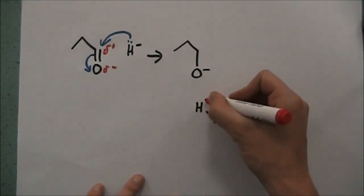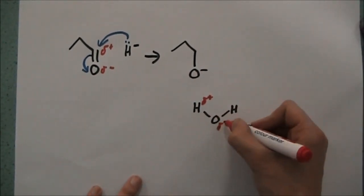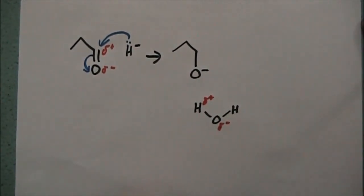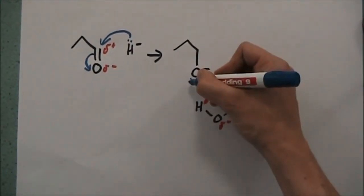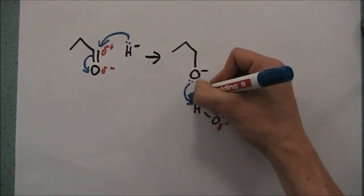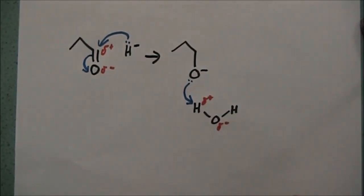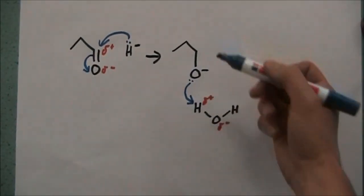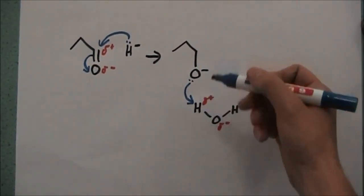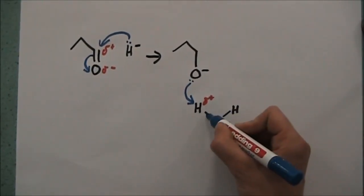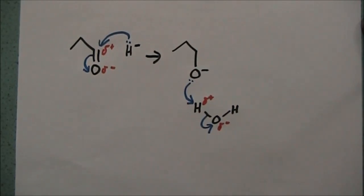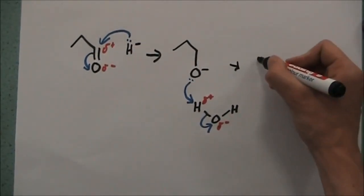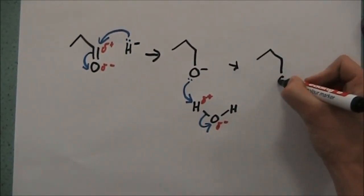The lone pair on the oxygen with the negative charge is going to attack this hydrogen here. It's going to donate over onto the oxygen, and then we're going to break this bond here back onto the oxygen. That's going to produce our alcohol.